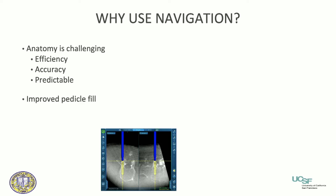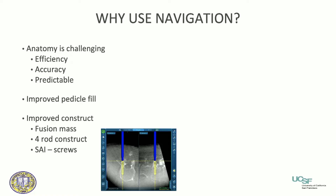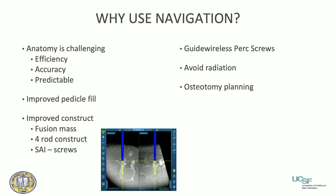We heard earlier about how it's important to have improved pedicle fill. At the time you can look at the pedicle because you have that cross-sectional imaging, and you can say how big should the screw be. We can improve our construct — easily do four-rod constructs, SAI screws, things like that. For minimally invasive surgery, guidewireless PERC screws are very easy to do. You drop a projection, you don't need a guide wire, it makes the procedure safer. For the surgeon, we avoid radiation, and I'm going to talk about osteotomy planning and precision medicine in custom implants.